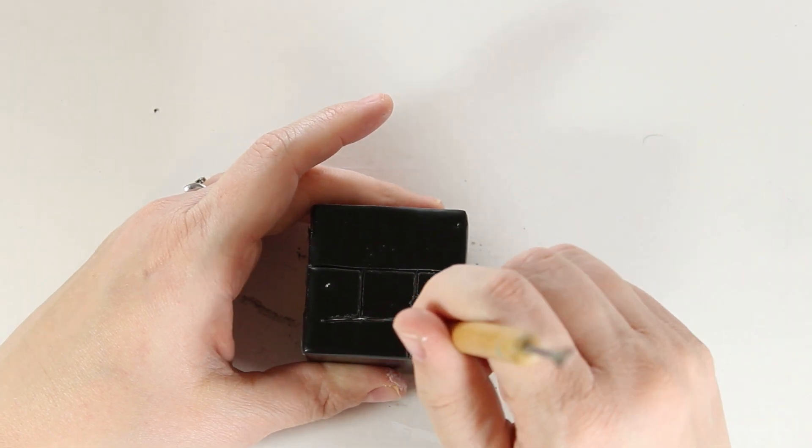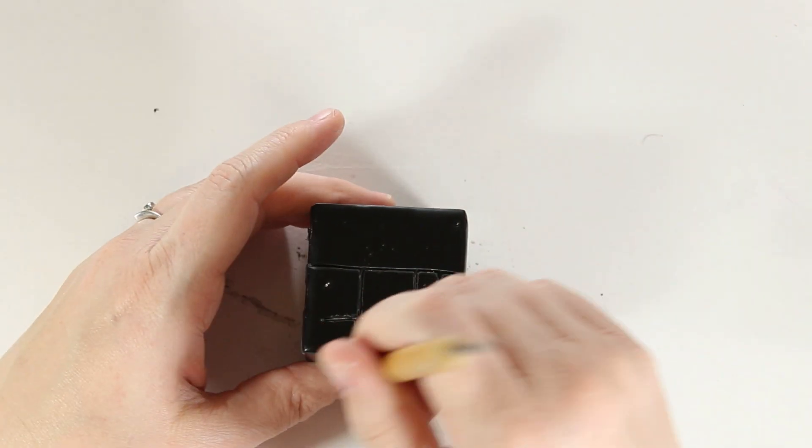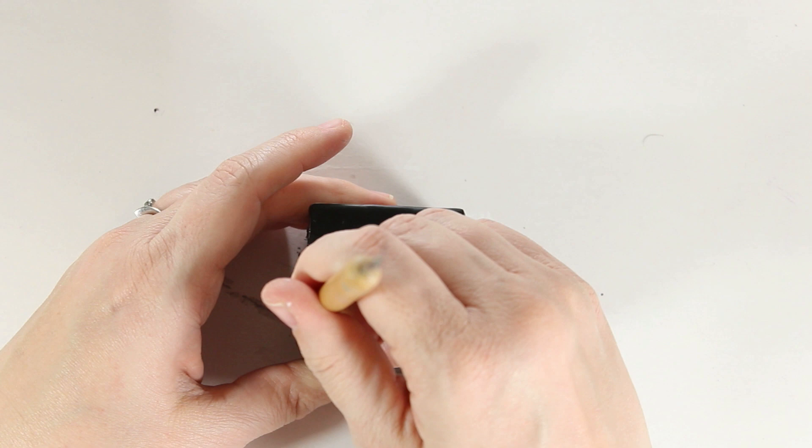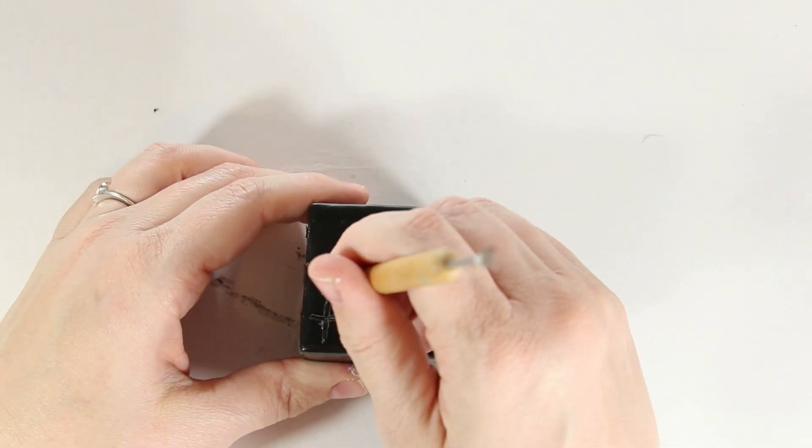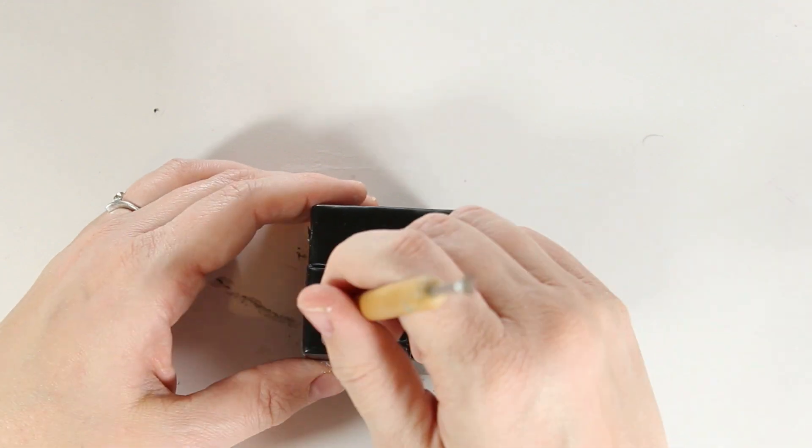I knew when I started this piece that I wanted to be really careful about the lines going off the edges. I wanted them all to meet, so that each side kind of flows into the next side. So I'm trying to be really careful about the lines that I extend to the edges.